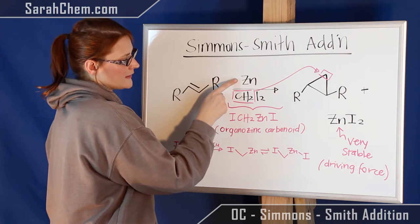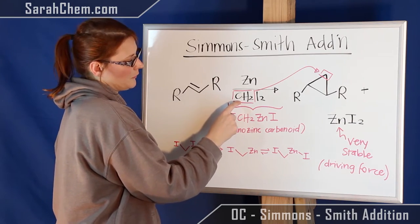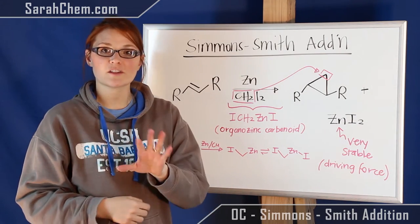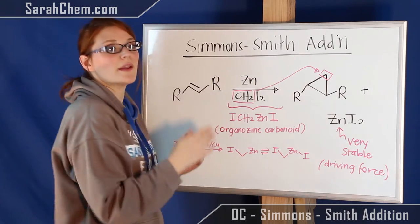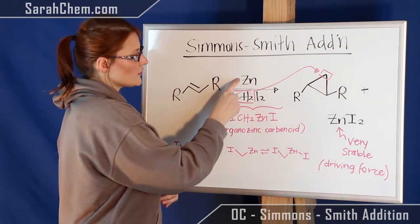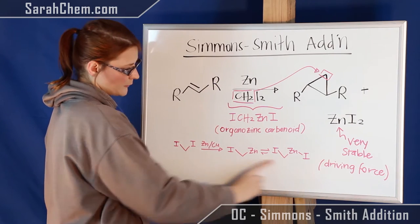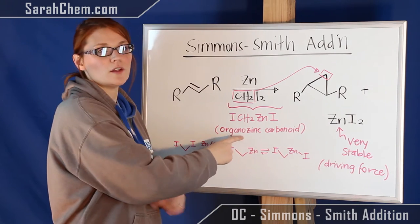Now when you take a look at this, often the way it will be written is zinc over CH2I2. Something that's important to know, especially if you're considering the mechanism, is that you're not actually dealing with these two independent from one another. These two actually react with one another, as we see over here, to make the organozinc carbenoid.